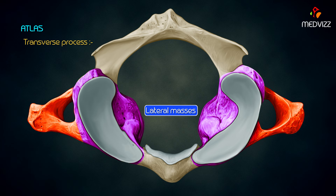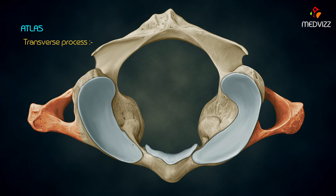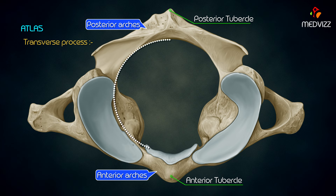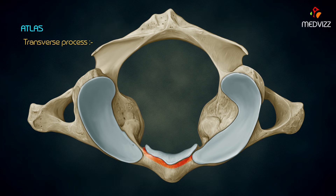The transverse processes of the atlas project laterally from the lateral masses, making them more laterally placed than those of the inferior vertebrae. This makes the atlas the widest of the cervical vertebrae, providing increased leverage for attached muscles. The transverse processes are pierced by the foramen transversarium.